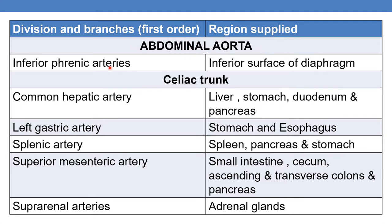Coming to the abdominal aorta — it is composed of inferior phrenic arteries supplying the inferior surface of the diaphragm, and the celiac trunk which is made up of the common hepatic artery supplying blood to the liver, stomach, duodenum, and pancreas; the left gastric artery supplying the stomach and esophagus; the splenic artery supplying the spleen, pancreas, and stomach; and the superior mesenteric artery supplying the small intestine, cecum, ascending and transverse colon, and pancreas.